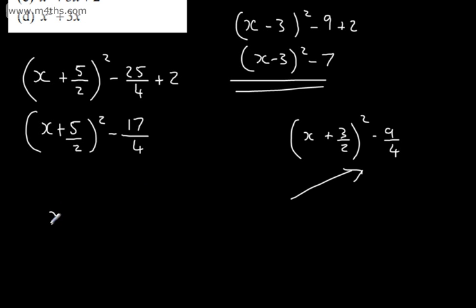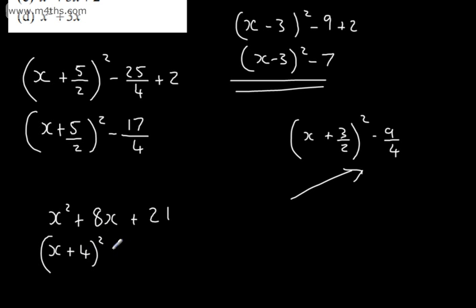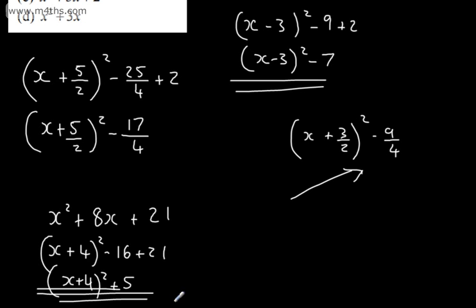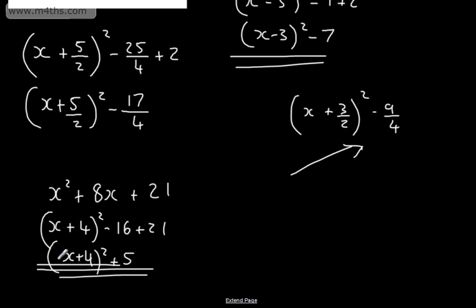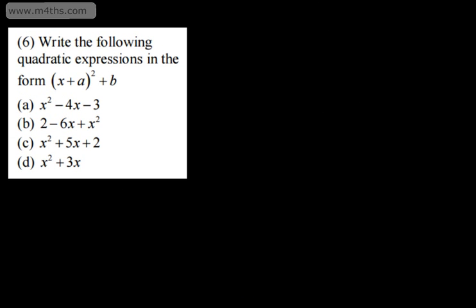For x²+8x+21: taking half of 8 gives 4, so it's (x+4)², subtract 4²=16, then add 21, giving (x+4)²+5. The vertex of this graph would be at (-4, 5). This is the advantage of completed square form — we're essentially using graph transformations.